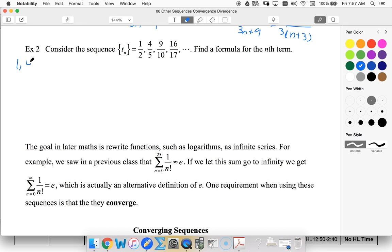So numerator 1, 4, 9, 16, the next one would be 25, 36. These are just the square numbers, starting with the first square number, so n squared.